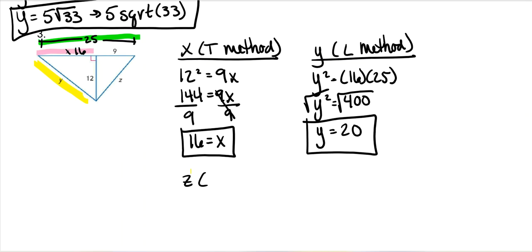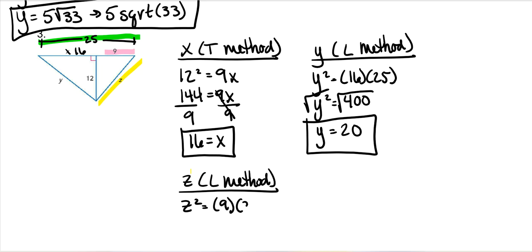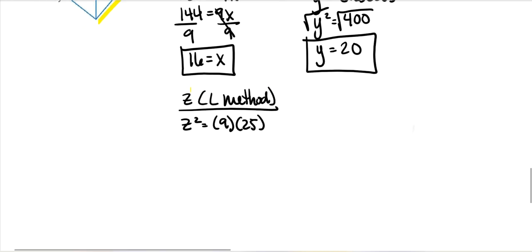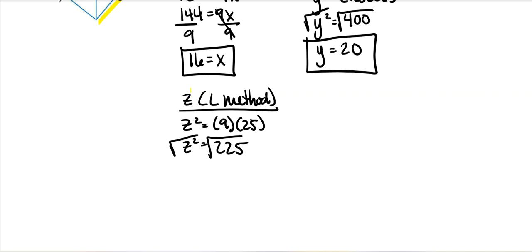And then for Z, we use the L method again. Z squared equals 9 times 25. 9 times 25 is 225. Taking the square root of both sides: the square root of 225 is 15. That's the end of our notes.